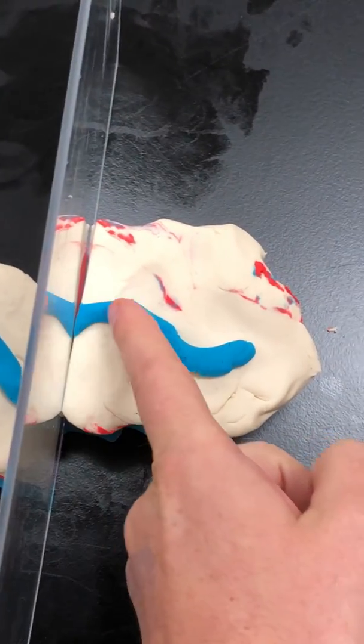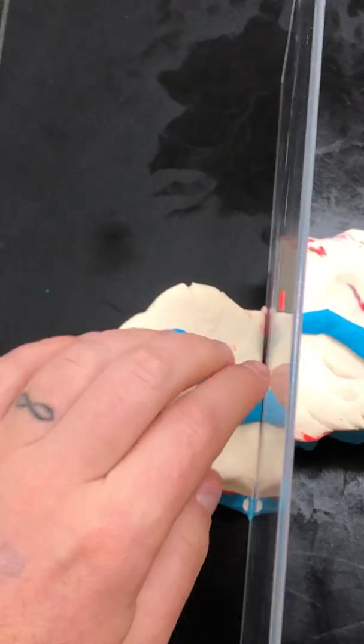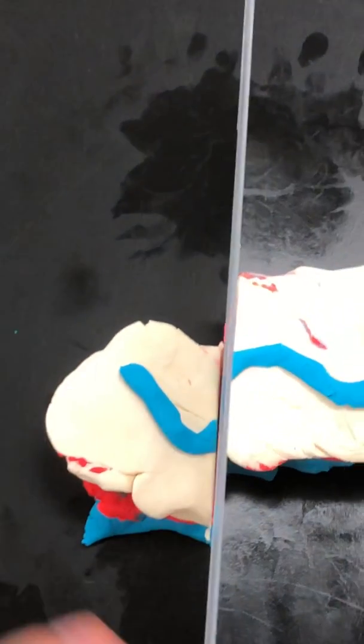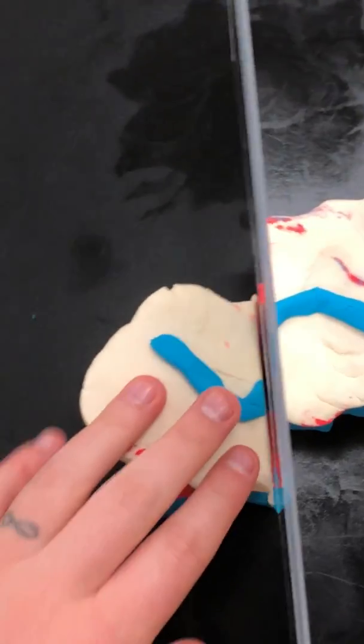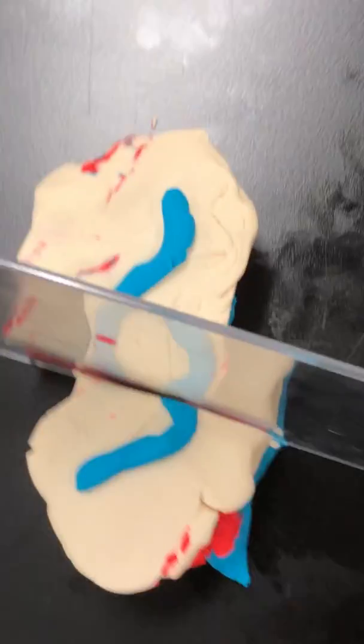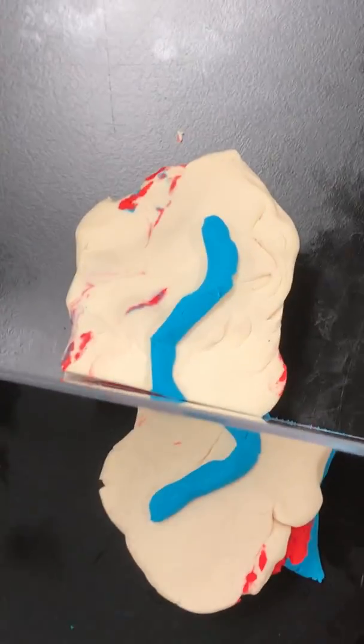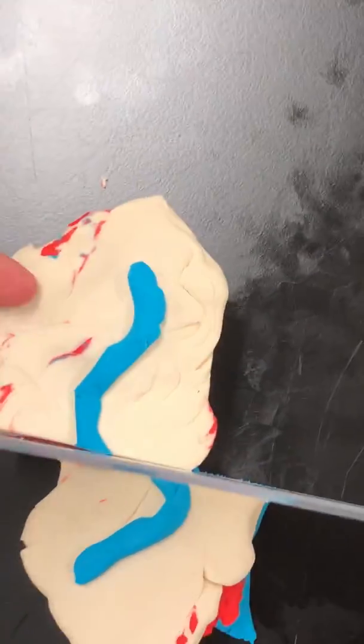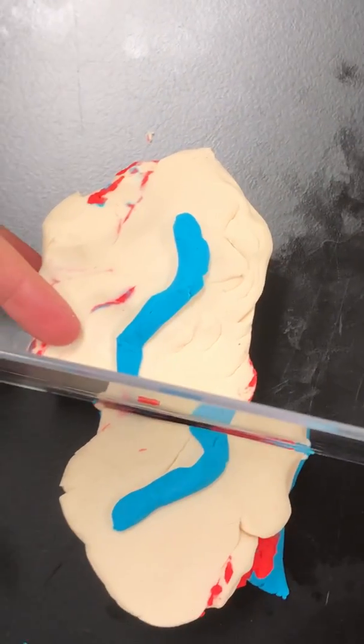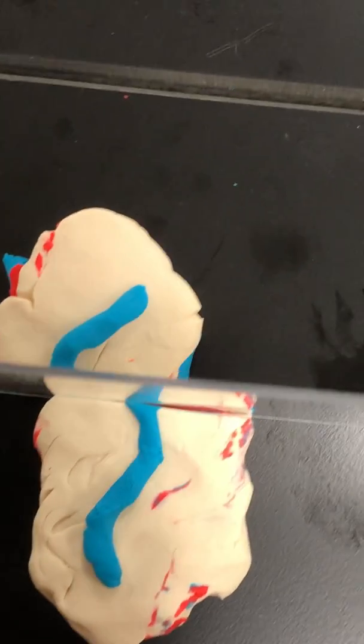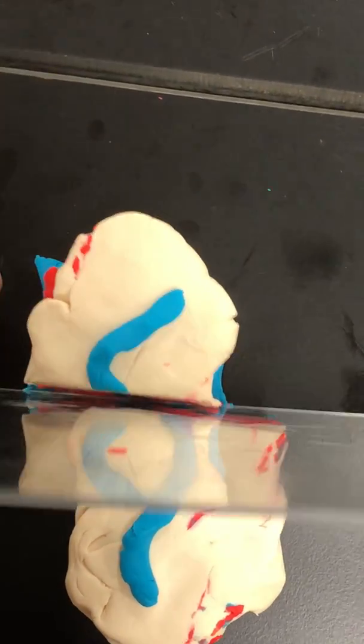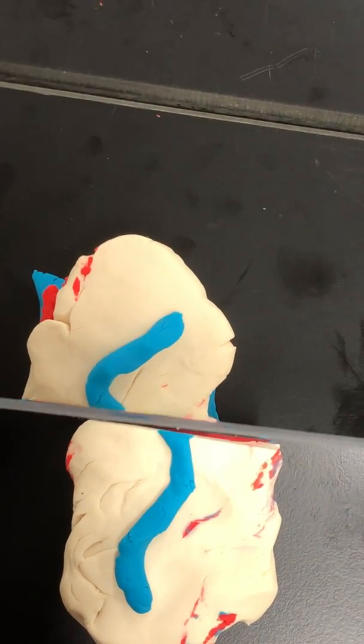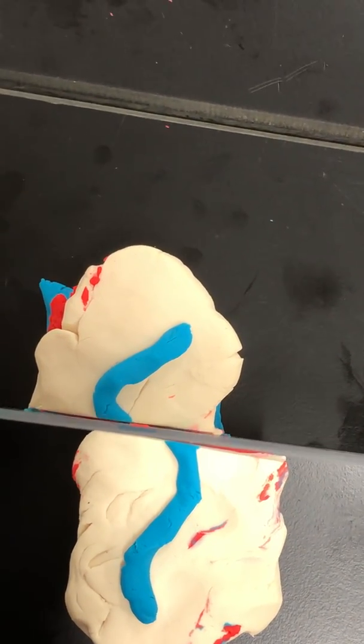So this part of the river channel matched up with this part of the river channel and it's moved to the side. Now if you're standing on this side of the fault, let's go stand on this side of the fault, it looks like the river channel has moved to the left. And if you're standing on this side of the fault, it also looks like the river channel has moved to the left. Those points should have matched up, but now it's moved to the left.